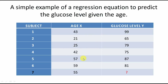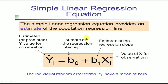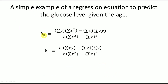Six data points are given to us, and using these we need to calculate b0 and b1. There are standard equations for this: b0 equals the summation of y multiplied by summation of x² minus summation of x multiplied by summation of xy, divided by n times summation of x² minus (summation of x)². And b1 equals n times summation of xy minus summation of x times summation of y, divided by n times summation of x² minus (summation of x)². Here b0 is the intercept and b1 is the coefficient of the independent variable.